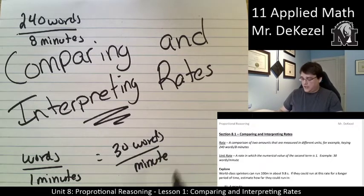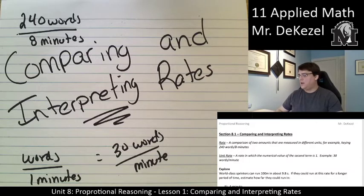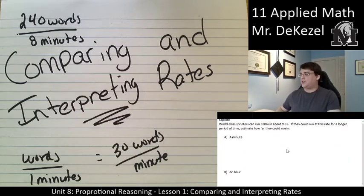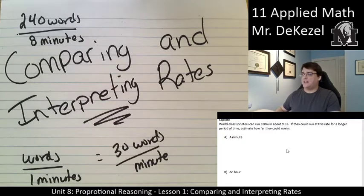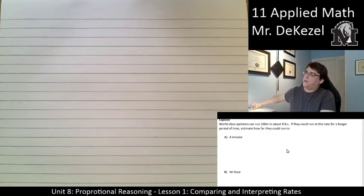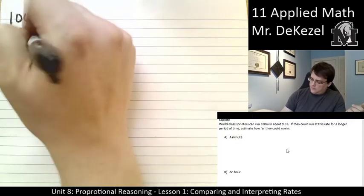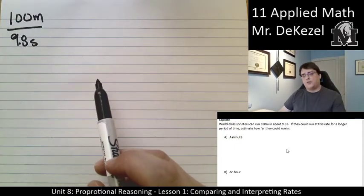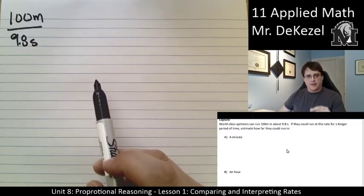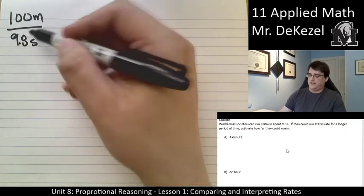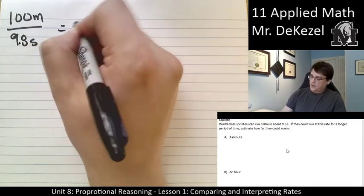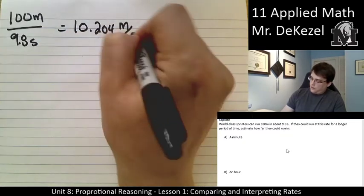30 words per minute is a more useful unit. We can compare that to other people's words in one minute. Not every test will be eight minutes long, but each test will be at least one minute. A world-class sprinter can run 100 meters in about 9.8 seconds. If they could run at this rate for a longer period of time, estimate how far they could run in a minute.